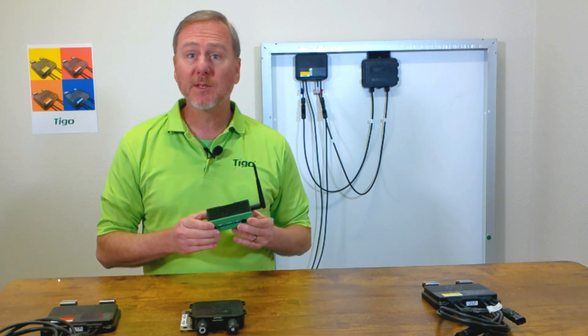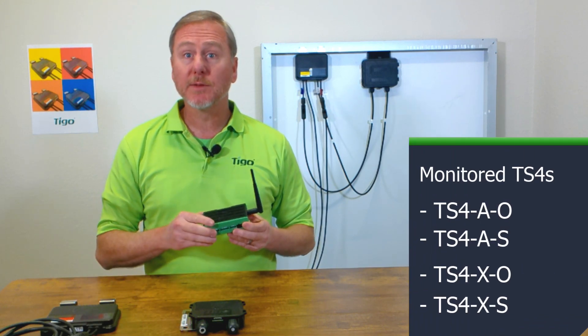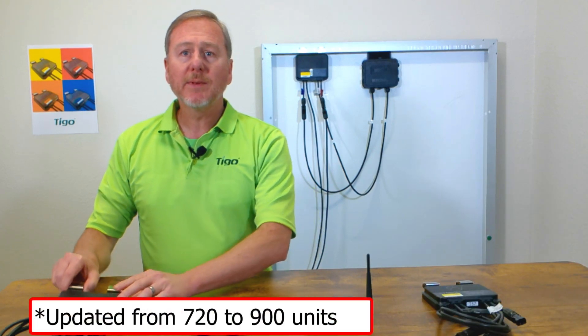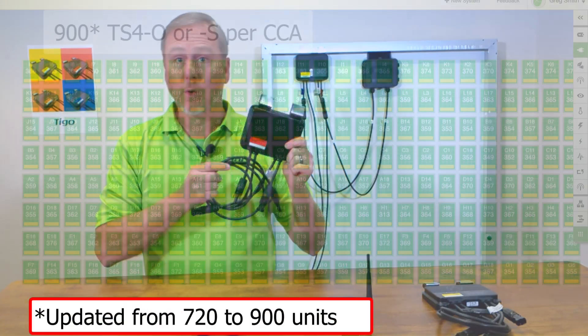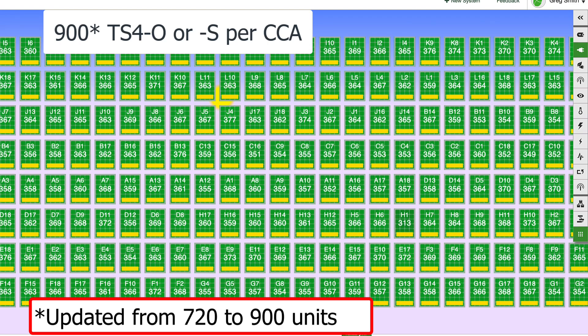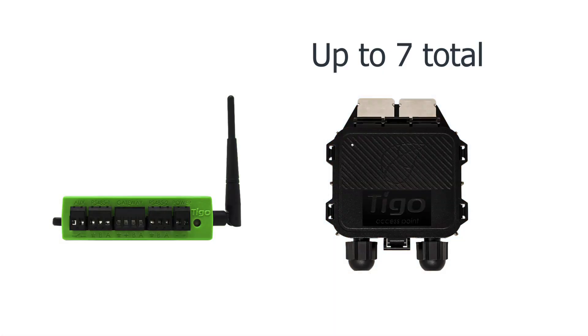The Cloud Connect Advanced, or CCA, is a powerful data logger that talks wirelessly to the rest of the system — specifically the components in the monitoring group: the TS4-O and the TS4-S. Up to 720 TS4s, either S or O, can communicate with a single CCA, and the CCA can connect up to seven Tygo access points, or TAPs.